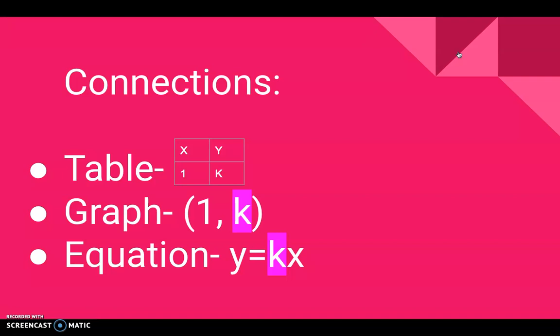Also in a graph when the x value equals 1, the y value is the constant of proportionality. For the equation the number multiplying x is the constant of proportionality.